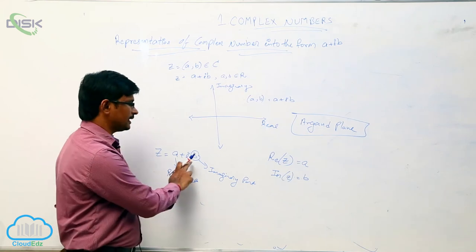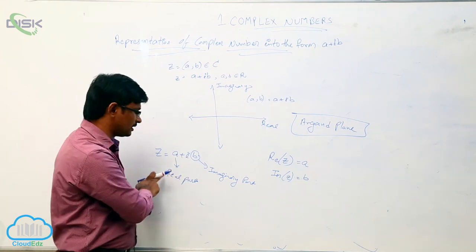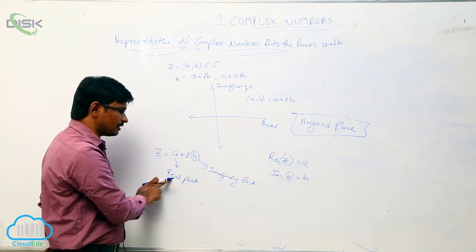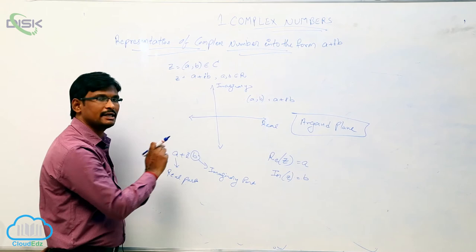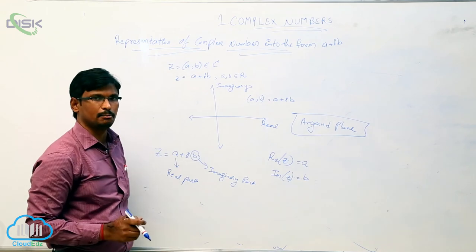So z equal to a plus ib is a complex number where a is called the real part and b is called the imaginary part.